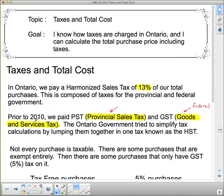In 2010, the Ontario government tried to simplify the tax calculations by lumping the two of them together into what is known as the HST. HST stands for Harmonized Sales Tax and it's currently 13%.